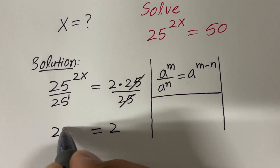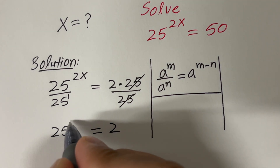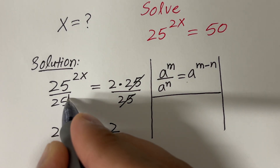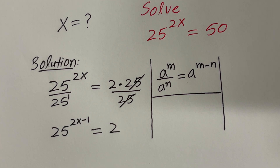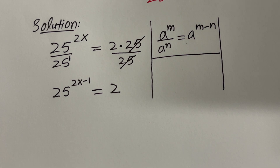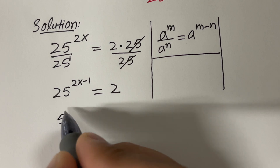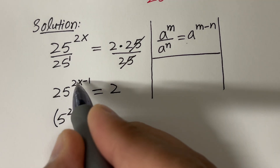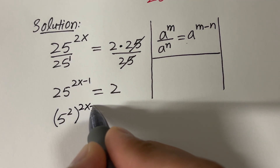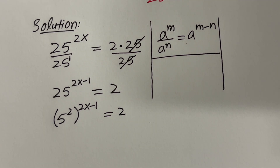So that means 25 raised to the power 2x minus 1 — subtracting the exponents. Again, before applying log, I would like to simplify it slightly. So I can write 25 as 5 raised to the power 2, and on top of it we have the exponent 2x minus 1, and the right-hand side is just 2.